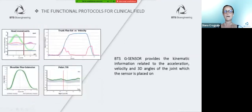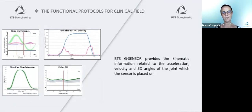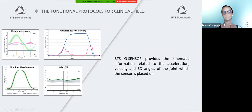The G-sensor provides the acceleration and velocity values of the specific motor task performed, and at the same time it allows the evaluation of the joint angles within the movement cycle.